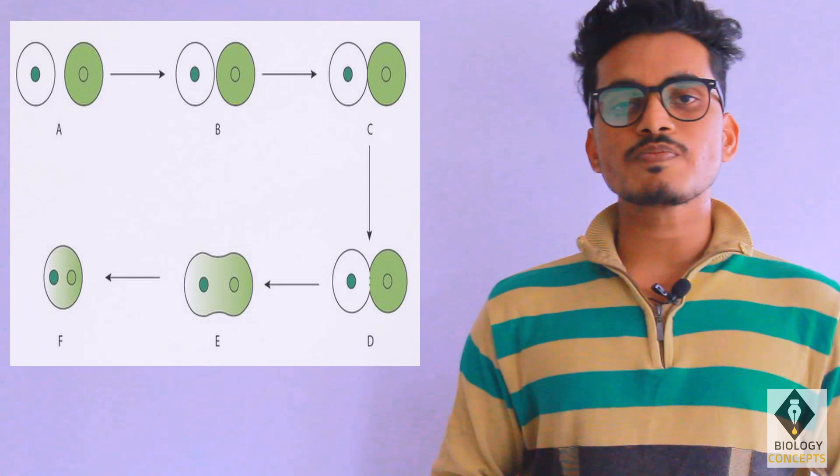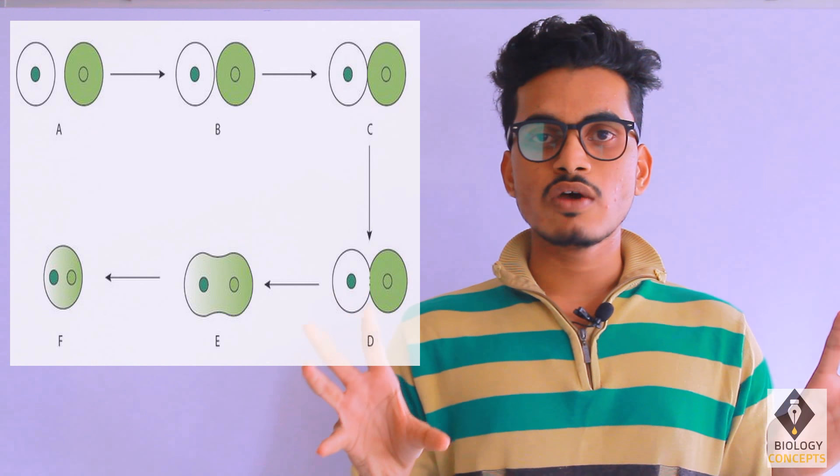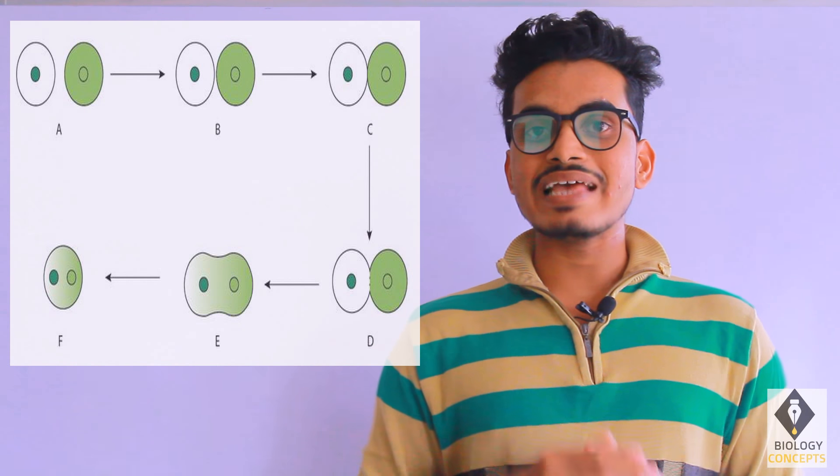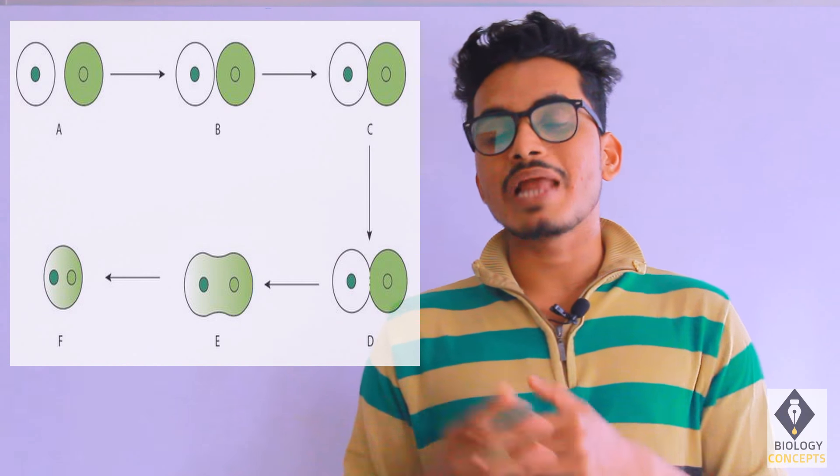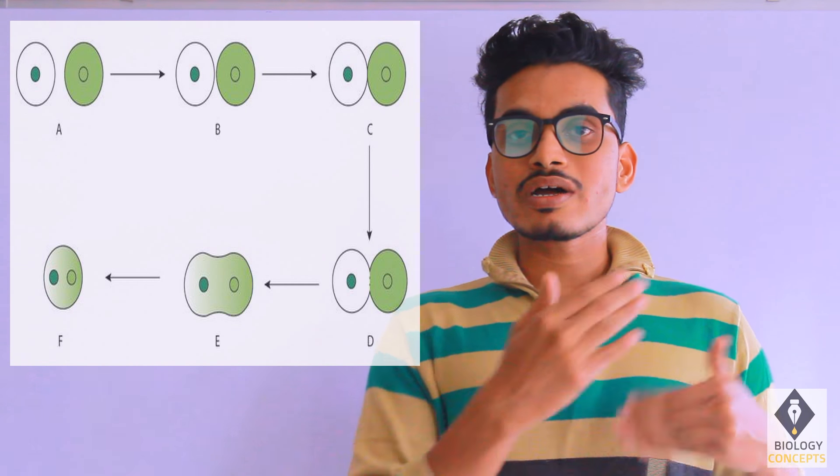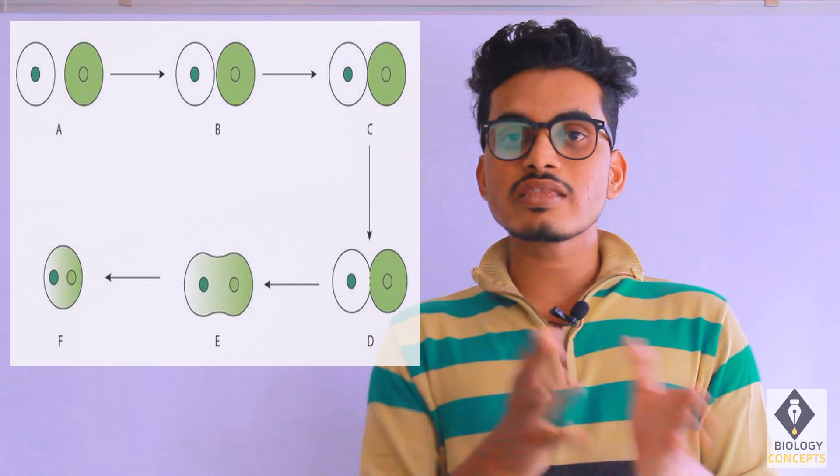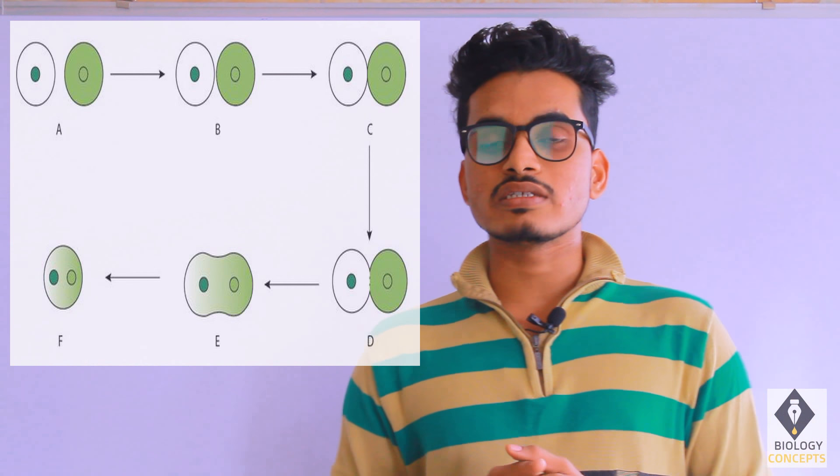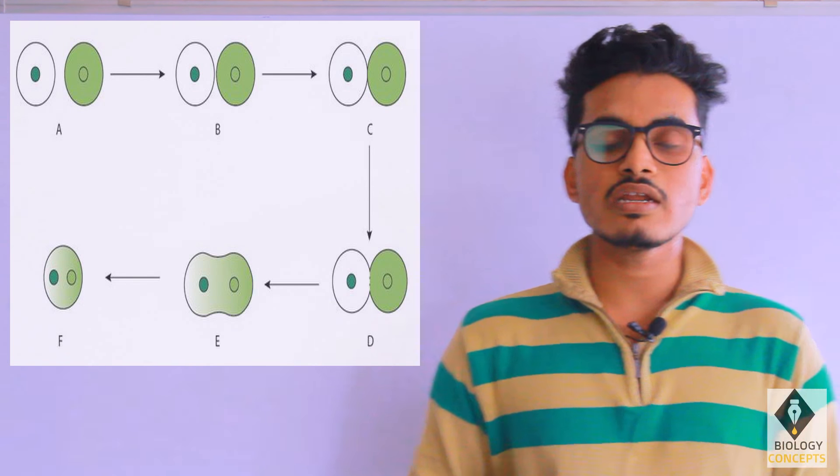Basically, we have two cells from different species. Fusion of the cells occurs, and that process is called plasmogamy, as we all know. But plasmogamy occurs while it restricts the karyogamy—I mean, division of the nucleus does not exist.